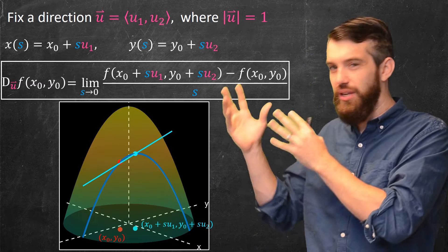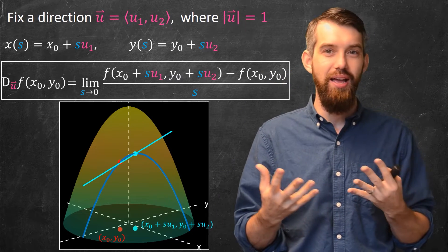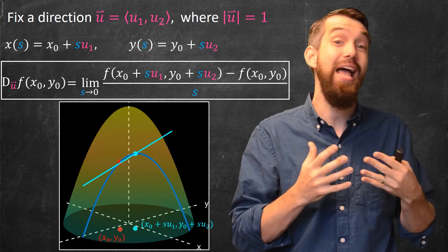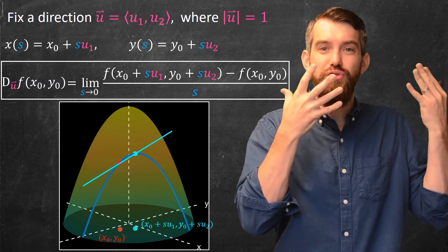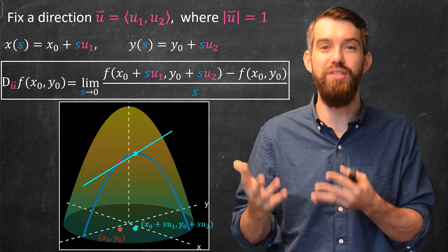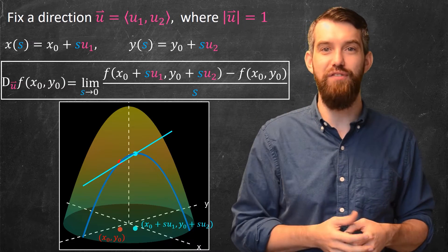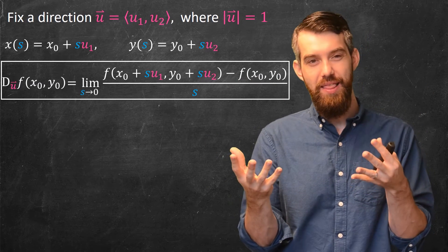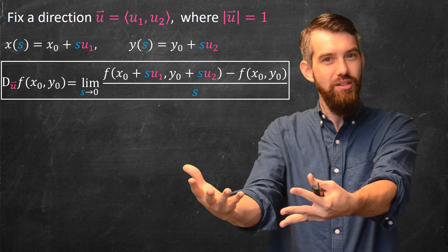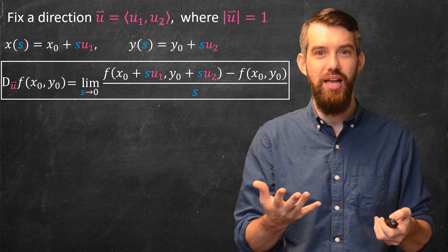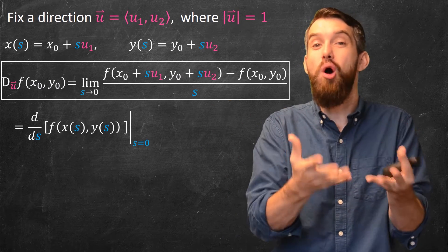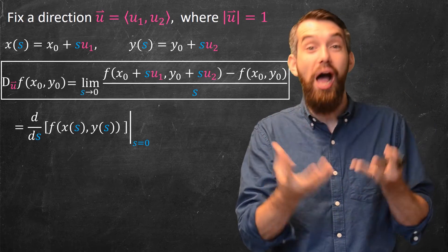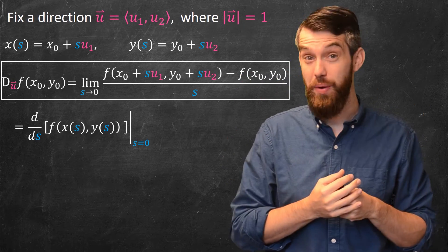Now how do we actually compute it? In first-year calculus we moved away from the limit definition and used derivative rules. Here the function f depends on x and y, and x and y both depend on s, so we have a composition of functions. This expression is really the derivative with respect to s of f(x(s), y(s)), evaluated at s equal to zero. That's the derivative of a composition — we apply the chain rule.